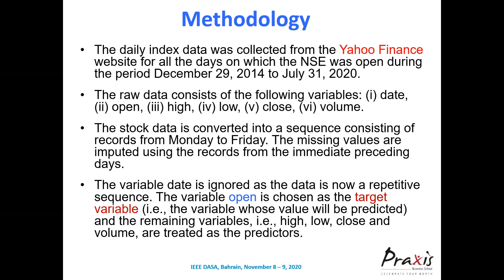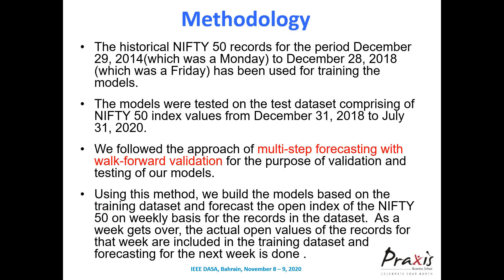For methodology, data was collected from Yahoo Finance for all trading days during the period December 29, 2014 to July 31, 2020. The raw data includes the variables: date, open, high, low, close, and volume. The stock data is converted into a sequence from Monday to Friday. Missing data was imputed by copying records from the immediately preceding day. The date variable is ignored as the data is already a sequence; the 'open' variable is chosen as the response variable and the others as predictors.